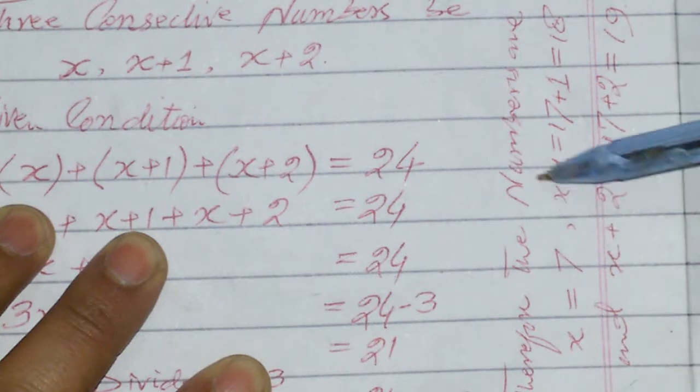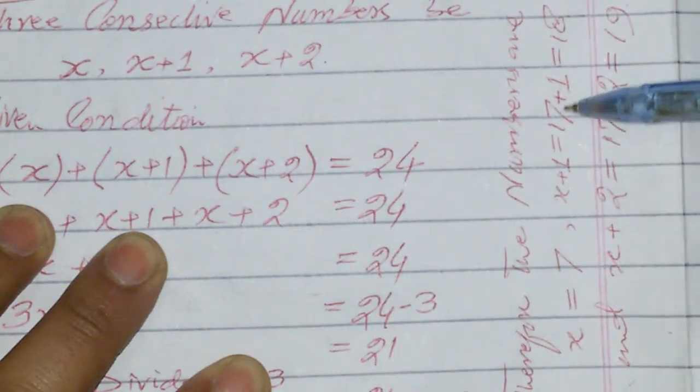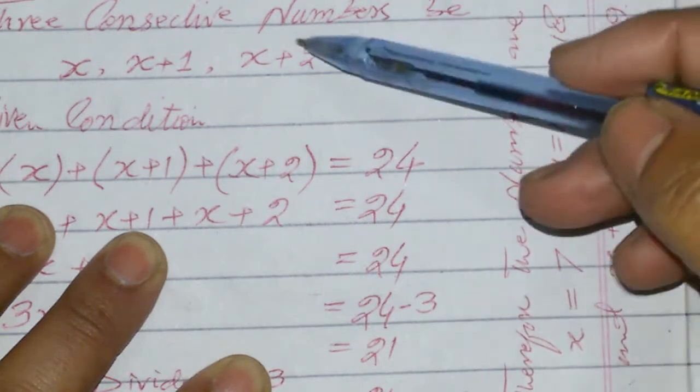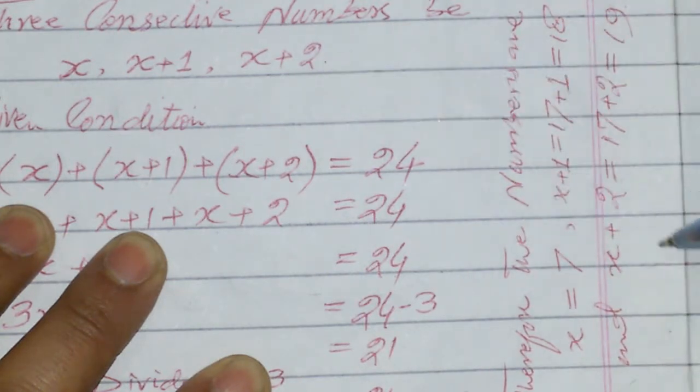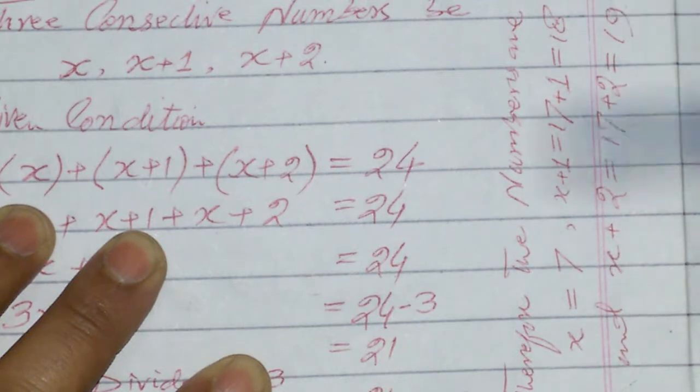The numbers are: x equals 7 is the first number. x+1, the second number, equals 7+1 equals 8. x+2, the third number, equals 7+2 equals 9. So the three consecutive numbers are 7, 8, and 9.